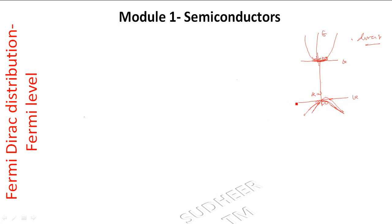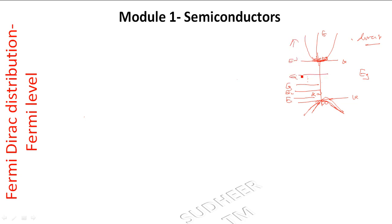We have a band gap with energy levels E1, E2, E3, and so on up to the i-th level EI, extending up to infinity. Above the valence level, we have one energy level with states available for electrons.